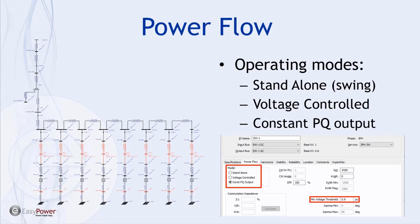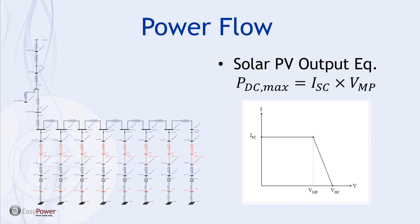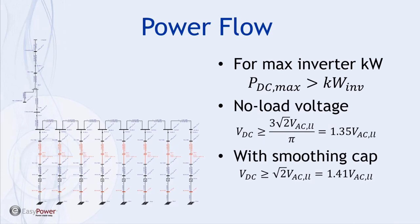This slide also gives some voltage relationships that can be established between the AC and DC systems on each side of the inverter, for inverters with and without smoothing capacitors. Power flow enables single-click report features, giving you things like branch megawatts and megavars, losses, voltage drop, and can flag violations in voltages as well.